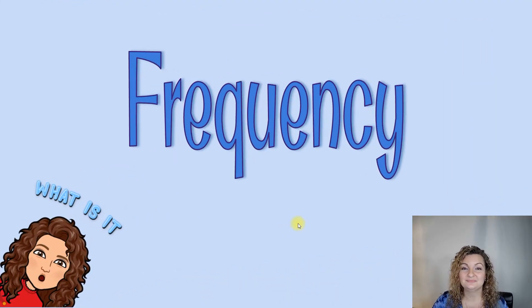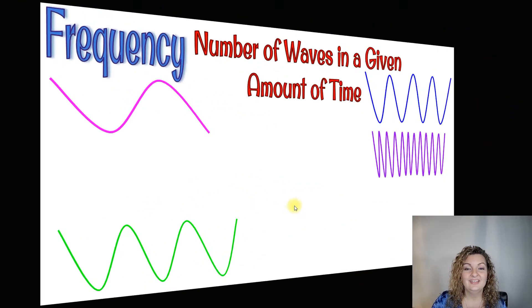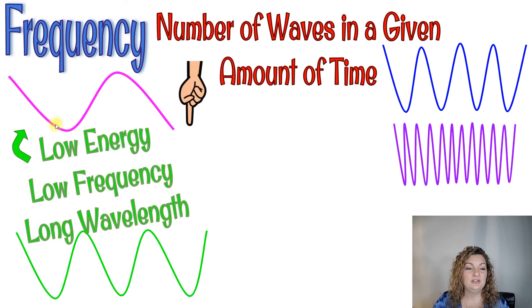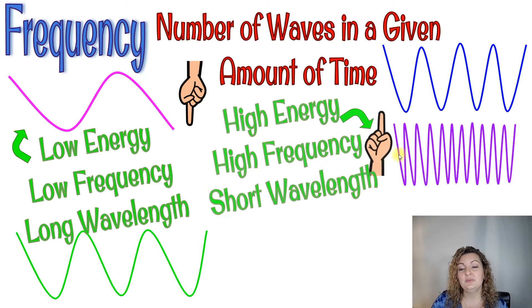Frequency. So frequency is the number of waves in a given amount of time. If you look at these four waves they all have different frequencies. So this one right here this pink one is going to have a very low frequency. Now when things have a low frequency they also have low energy and a longer wavelength. If you look at this purple wave over here this one is going to have the highest frequency on this page and that means that it has the highest energy and the shortest wavelengths.